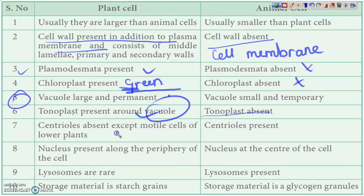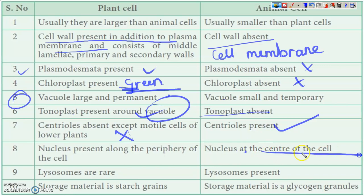For plant cells, centrioles are absent, while in animal cells centrioles are present. With respect to the nucleus, in plant cells the nucleus is generally pushed to one side by the sap vacuole, while in animal cells it is generally located in the center.